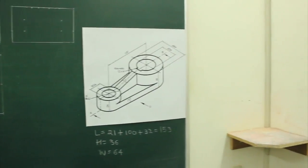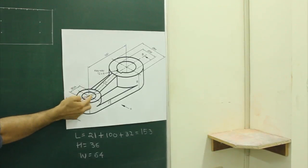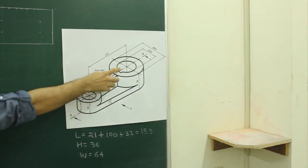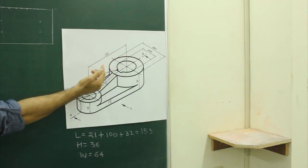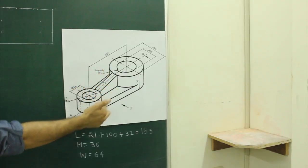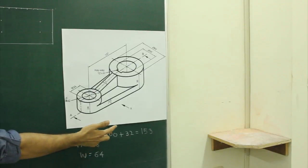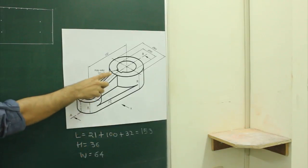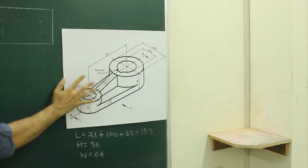In this sum, the total length is 153. If you see, this diameter is 42, so the radius would be 21. This length is 100, and the diameter is 64, so the radius would be 32. If you add all three — 21 plus 100 plus 32 — it would be 153. The height is 36 and the width is 64.